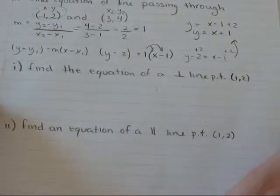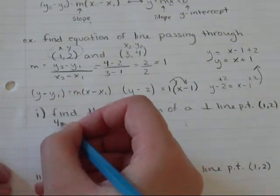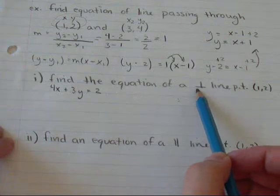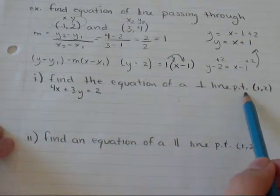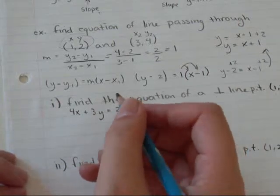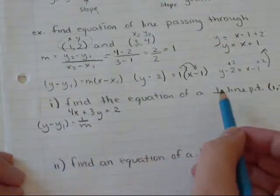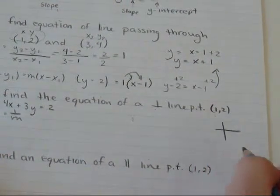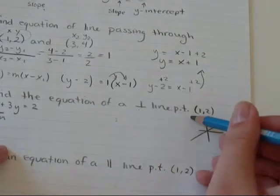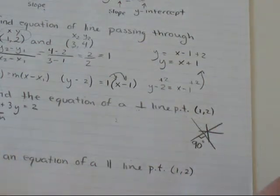It's going to be the line 4x plus 3y equals 2. Find the equation of a line perpendicular to the line 4x plus 3y equals 2 passing through the point 1, 2. You can think about this as y minus y1 equals negative 1 over m. It's perpendicular, which basically means when you graph the two of them, the slope of one will be going this way, for example. But the point is, when you have two lines, the angle between the lines is 90 degrees. That's what perpendicular means.